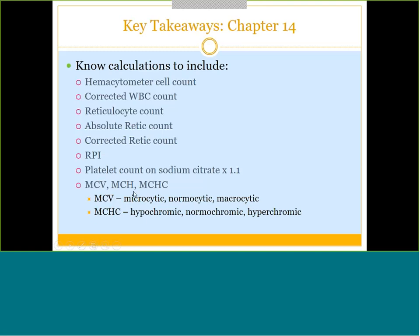For MCV and MCHC calculations, there are terms that go with those results. MCV reference range is 80 to 100 femtoliters — anything less than 80 is microcytic, anything greater than 100 is macrocytic. MCHC reference range is 32 to 36 grams per deciliter — anything less than 32 is hypochromic, anything greater than 36 is hyperchromic. Go back and relook at the Chapter 14 lecture PowerPoint for the full chart.